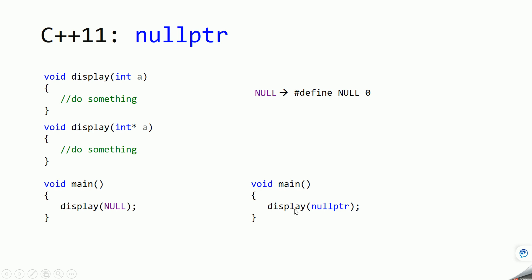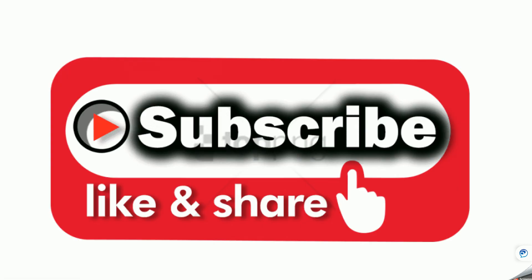In C++11 we have a proper null pointer, which is nullptr. So when you say display(nullptr), the correct function — the one taking a pointer to an integer — will get called. To solve the problem of null pointer ambiguity, we have nullptr in C++11, which allows you to directly call the intended display function. Thanks for watching. If you like this video please subscribe to my channel and hit the like button.